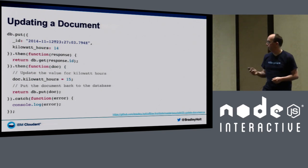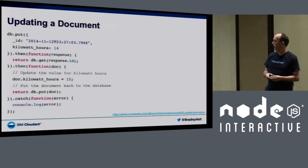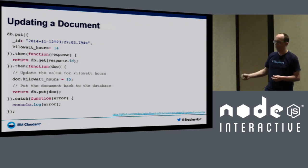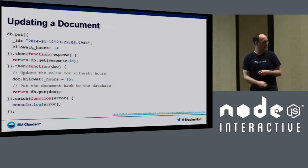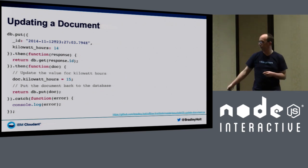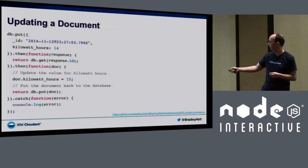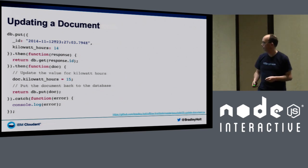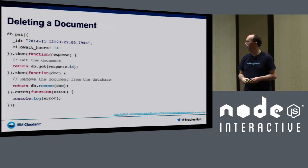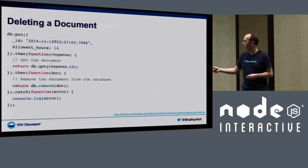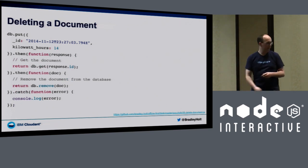To update a document, put the document in the database, get it back out, make your changes — for example, updating the number of kilowatt hours — and then call `db.put()` to put it back in the database. To delete a document, it's the same idea but use `db.remove()` instead.